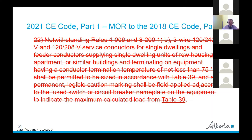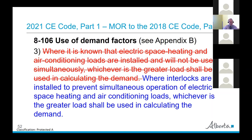Here's another eyebrow-raiser. We've always had the rule that where electric space heating and air conditioning loads are installed and will not be used simultaneously, whichever is the greater load shall be used in calculating the demand. The change is that it now says 'where interlocks are installed to prevent simultaneous operation of electric space heating and air conditioning loads.' Under the 2021 code, there will now have to be an electrical interlock rather than just depending on making sure it doesn't happen simultaneously.